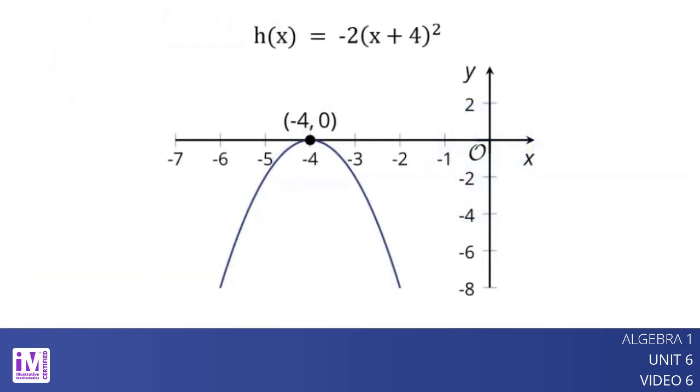Here is the graph of negative 2 times the quantity x plus 4 squared. Notice that the squared term has a negative 2 as its coefficient. The function value is 0 when x equals negative 4.